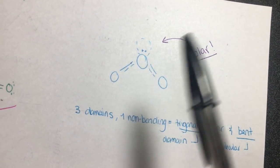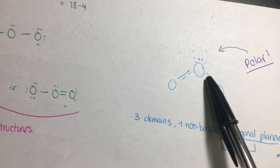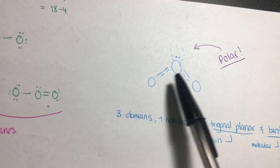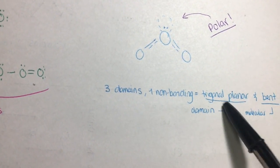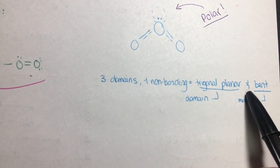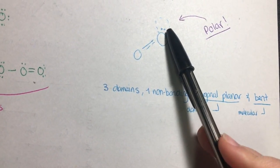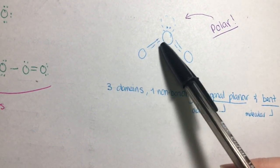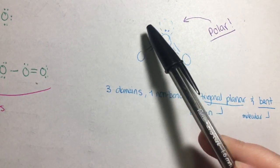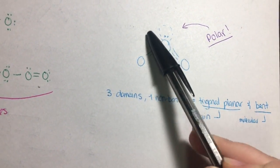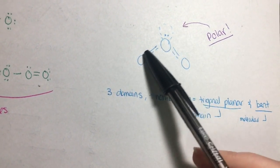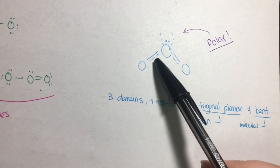Now we figure out the geometry, remembering the two non-bonding pairs on the central oxygen. There are three domains — the non-bonding pair and each bonded oxygen. With three domains and one non-bonding pair, the domain geometry is trigonal planar but the molecular geometry is bent. There is no bond dipole because oxygen and oxygen have the same electronegativity. However, this molecule is polar because it is bent and there is a negative region from the non-bonding electron pairs. Since this molecule is bent, it is polar even though there are no bond dipoles.